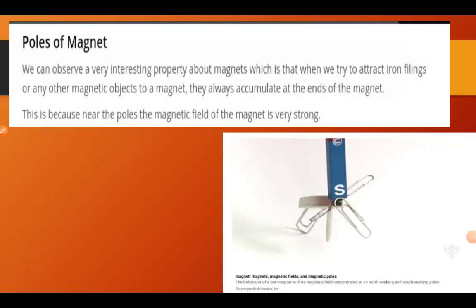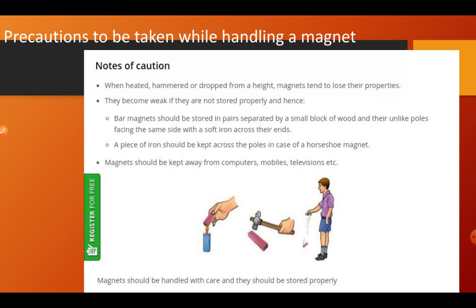Another property says that the poles of a magnet possess strong magnetism. When we try to attract iron filings or any other magnetic object to the magnet, they always accumulate at the ends of the magnet, as you can see in the picture. This is because near the poles the magnetic field of a magnet is very strong.